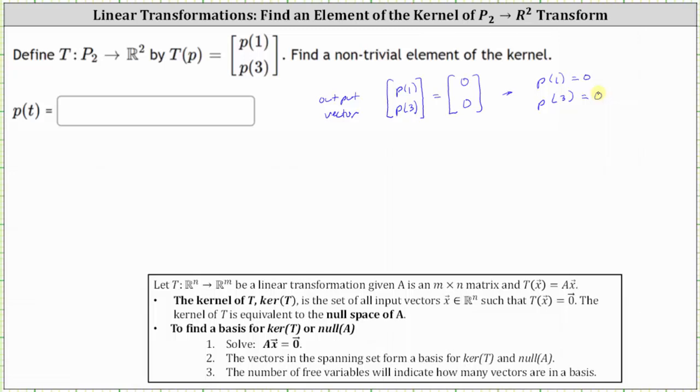Now let's consider the inputs are all the degree two polynomials in P2. We can see the variable is t because we're given p of t. So any degree two polynomial where the variable is t can be written in the form at squared plus bt plus c.